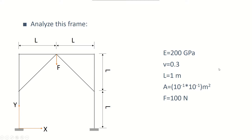Let's analyze this frame using ANSYS APDL. We have a bunch of beams attached to each other: 1, 2, 3, 4, 5, 6, 7, 8 beams, and 1, 2, 3, 4, 5, 6, 7 joints.